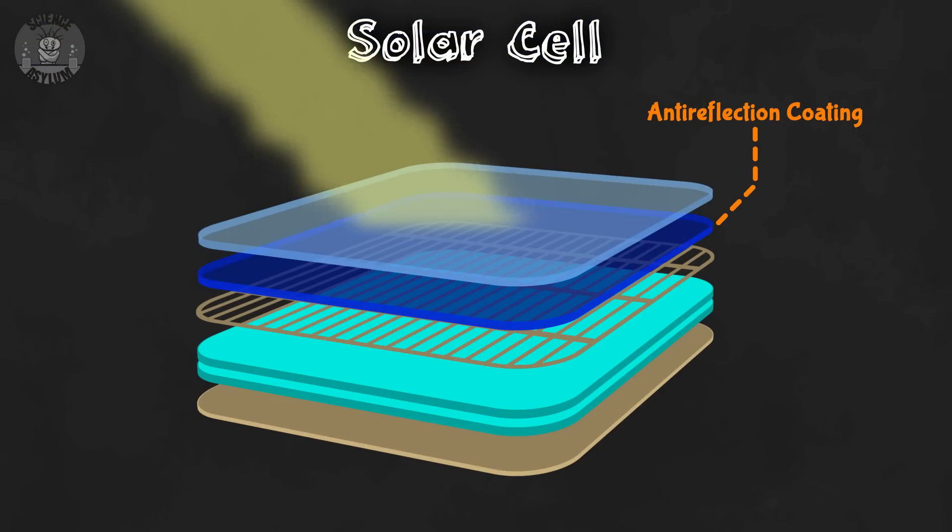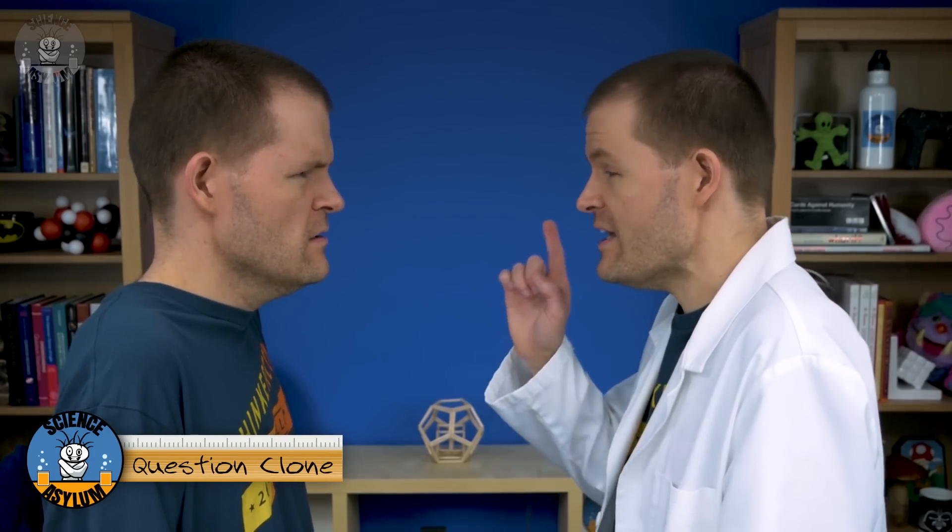Next is the anti-reflection layer. That's the layer that makes the solar cell look dark. Doesn't that mean the light never gets through? Oh no, it lets the light in. It just doesn't let it back out. Really? How does that work? This coating is so cool. Let me explain.